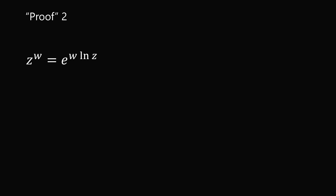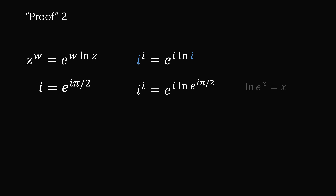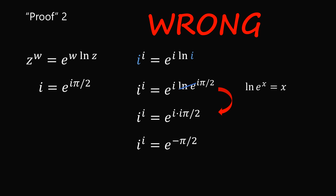Here's another proof that is also seen. Complex exponentiation can be defined as z to the power of w equals e to the power of w times the natural log of z. So i^i equals e to the power of i times the natural log of i. Since i equals e to the i pi over 2, we substitute in for i, then use the rule that ln(e^x) equals x to simplify, giving e to the power of i times i pi over 2. Since i times i is negative 1, we get i^i equals e to the negative pi over 2. But once again, an unjustified step is used between steps 2 and 3.